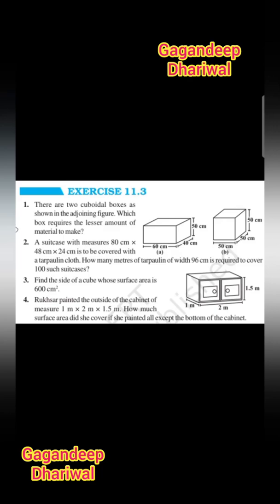This is Exercise 11.3, question number one. There are two cuboid boxes as shown in the adjoining figure. We have to determine which box requires the lesser amount of material to make. Two boxes are given — one is in the form of a cuboid and the other is in the form of a cube. We need to find the surface area of both shapes and compare which one has the lesser surface area, as that figure will require the lesser amount of material.